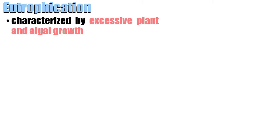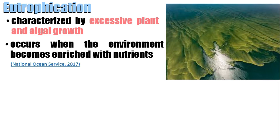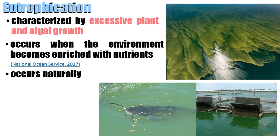Next is eutrophication. It is characterized by excessive plant and algal growth, due to the increased availability of one or more limiting growth factors needed for photosynthesis, which includes sunlight, carbon dioxide, and nutrient fertilizers. It occurs when the environment becomes enriched with nutrients, such as nitrogen. It occurs naturally, but human activities have accelerated the rate and extent of eutrophication through both point source discharges and non-point loadings of limiting nutrients — such as nitrogen and phosphorus — into aquatic systems.